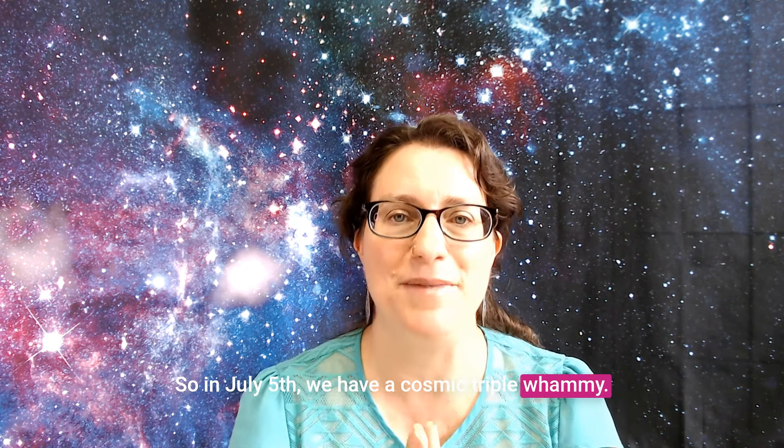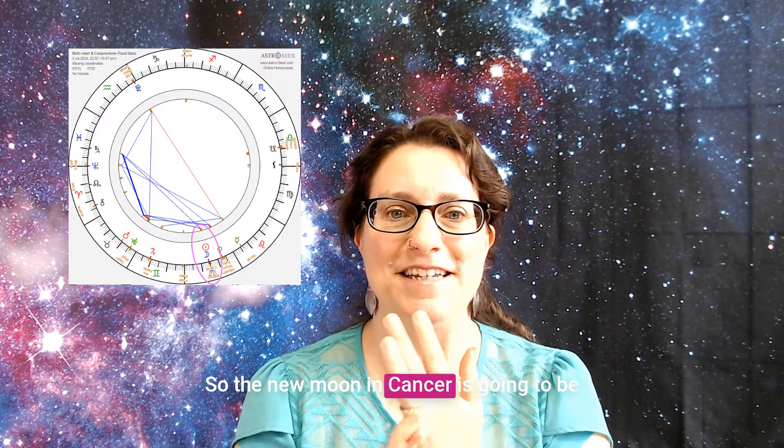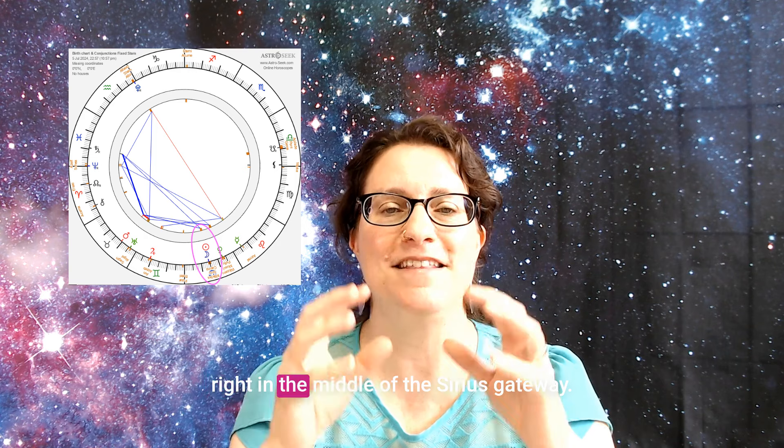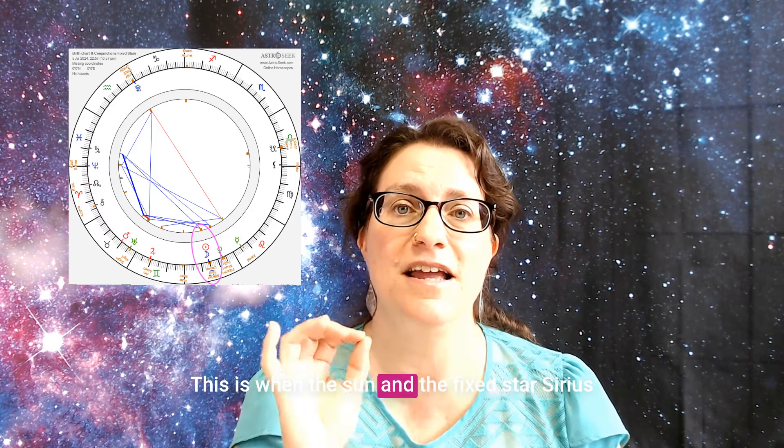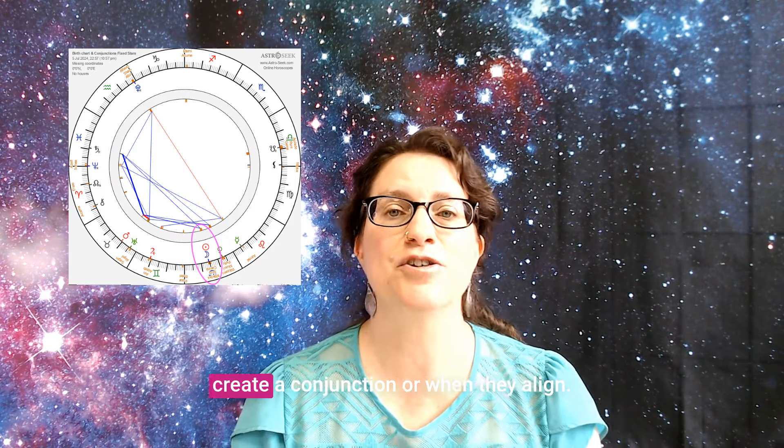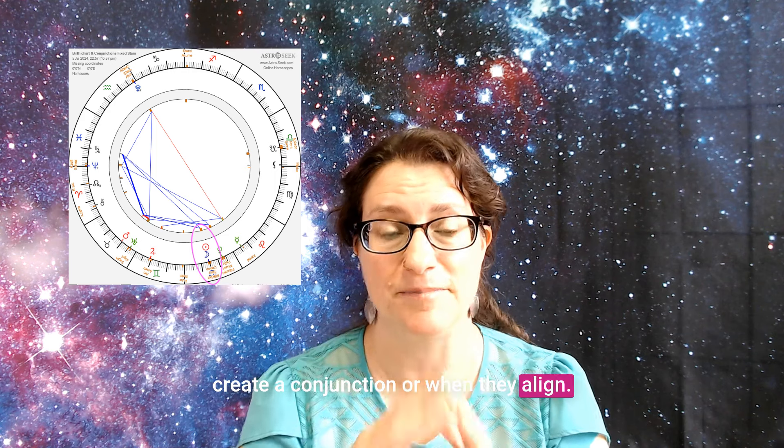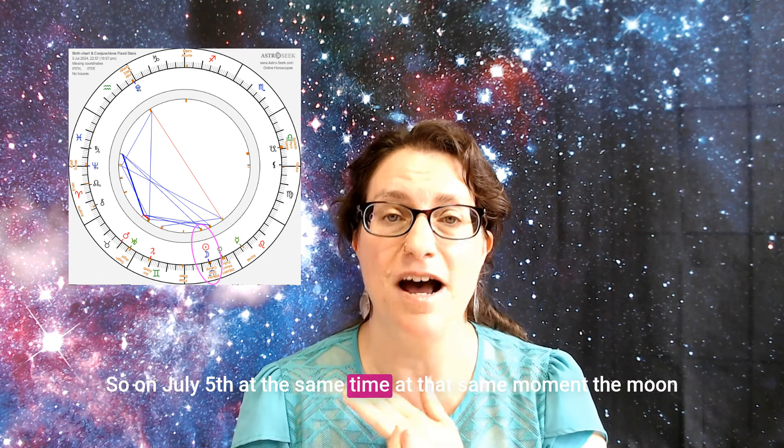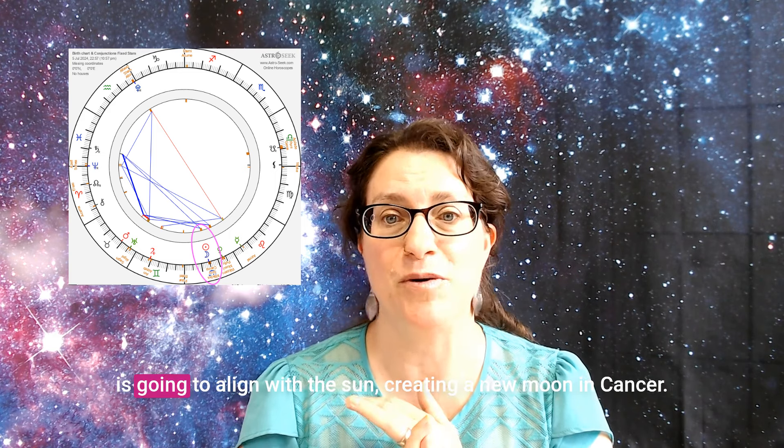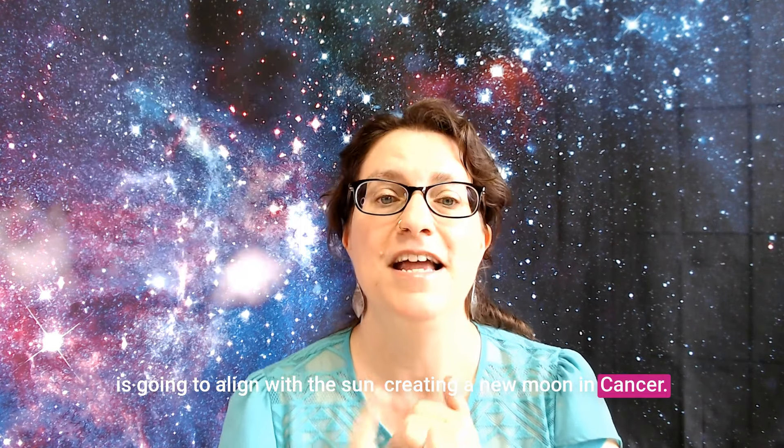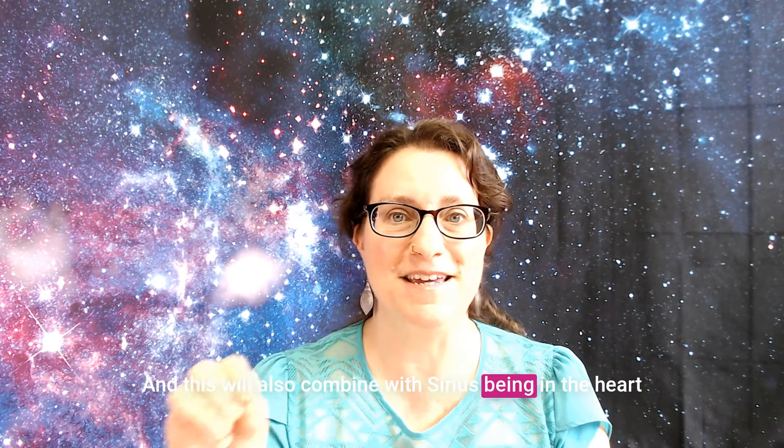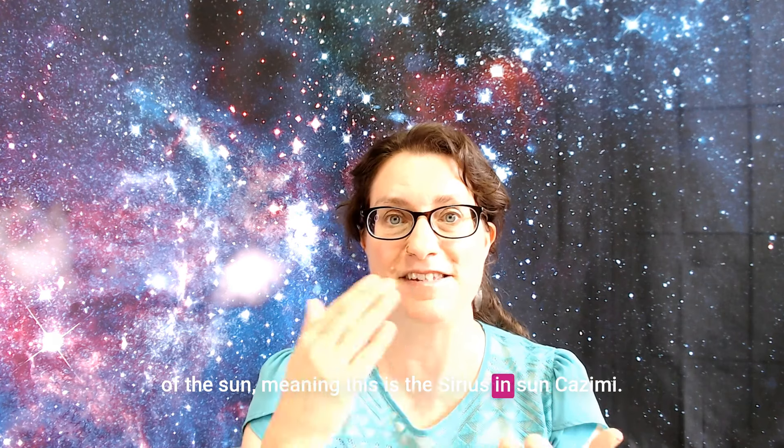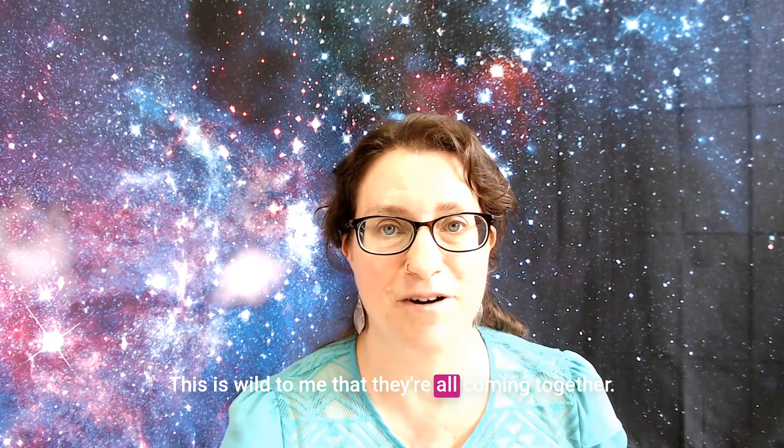So on July 5, we have a cosmic triple whammy. The new moon in Cancer is going to be right in the middle of the Sirius gateway. So what's the Sirius gateway? This is when the sun and the fixed star Sirius create a conjunction or when they align. So on July 5, at the same time, at that same moment, the moon is going to align with the sun creating a new moon in Cancer. And this will also combine with Sirius being in the heart of the sun, meaning this is the Sirius and Sun Kazemi.